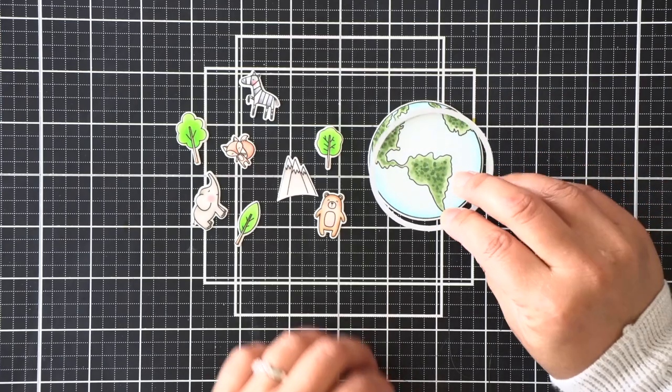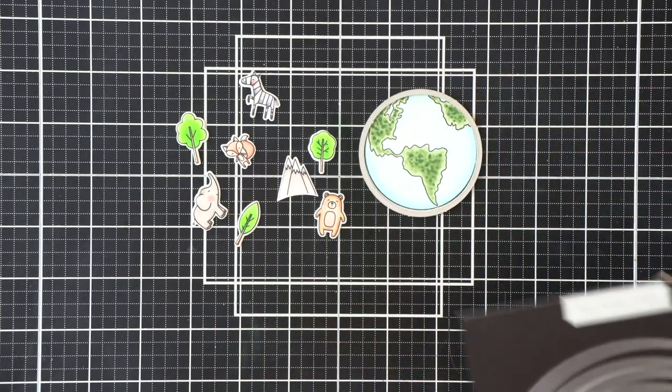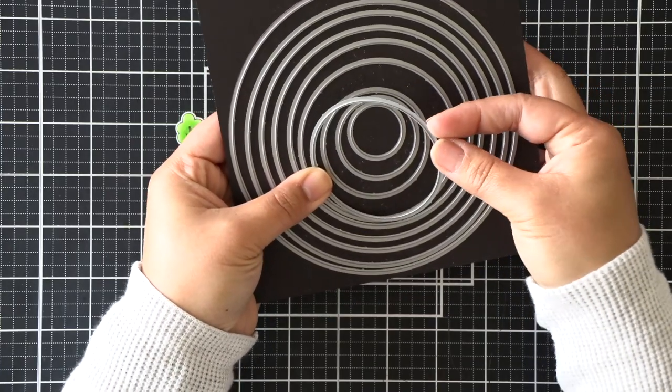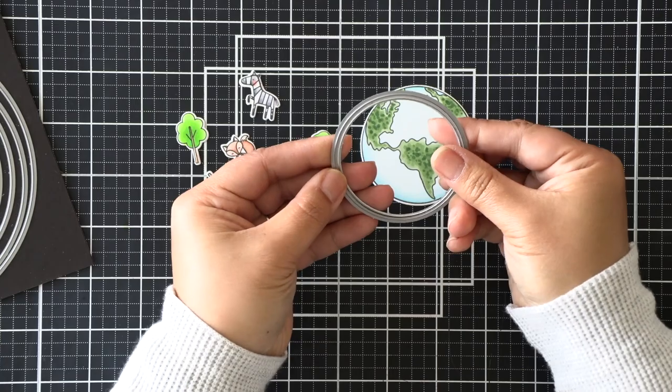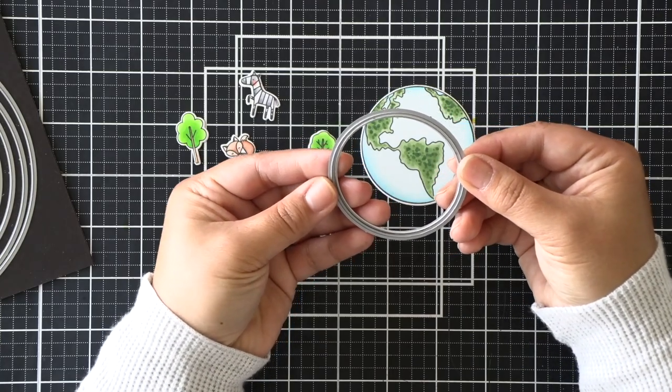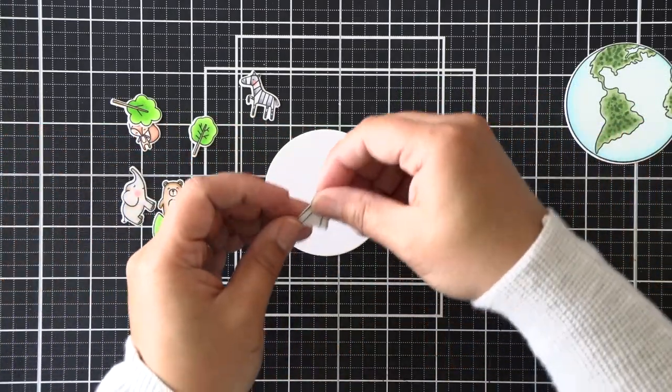We have that earth die, and I'm just going to use the nested circles from Simon Says Stamp to find a die that's just slightly bigger than that one. That way I can adhere all of these images after die cutting and coloring them to that round circle that I just cut using white cardstock.